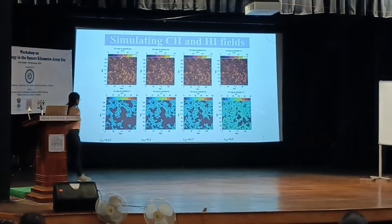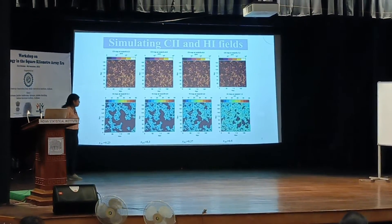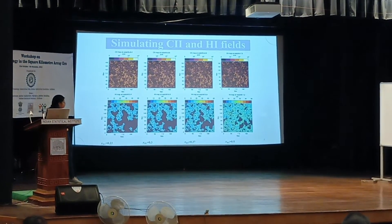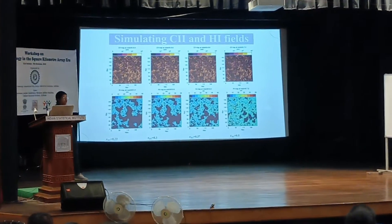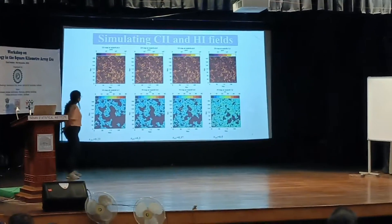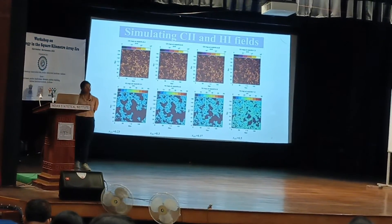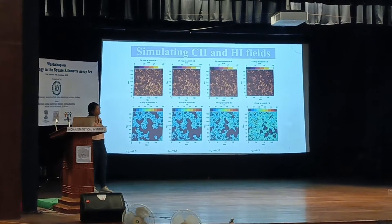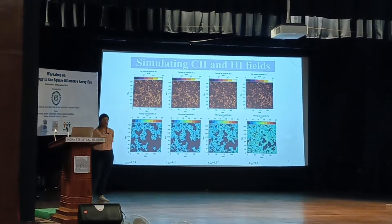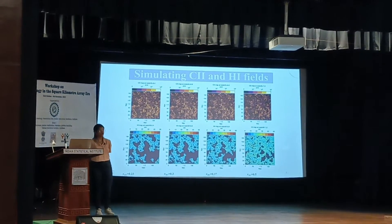These are some of the simulated maps of those two signals. The maps at the bottom are the average HI maps, which have been simulated by a combination of N-body simulations followed by radiative transfer algorithms, and then the RIMU set of codes. The top panel shows the simulated CII maps — CII intensity maps — generated by assigning CII luminosity to dark matter halos, which have been generated by N-body and FOF algorithms.